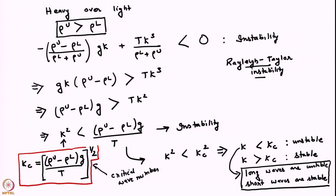Now let us try to understand why long waves are unstable and why short waves are stable. Instability is to be expected here because we have a statically unstable configuration — we have heavy over light. Sufficiently long waves follow the intuitive expectation that they are unstable. More interesting are the sufficiently short waves which are stable. Let us try to understand why.